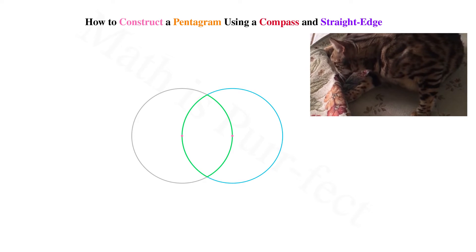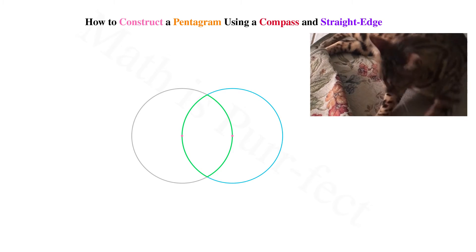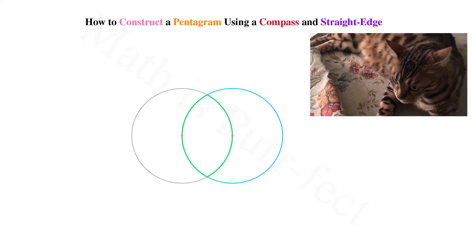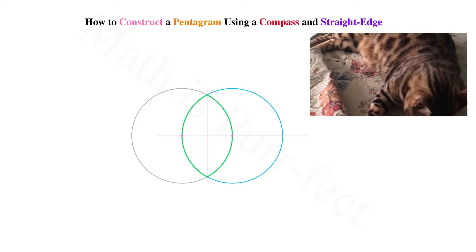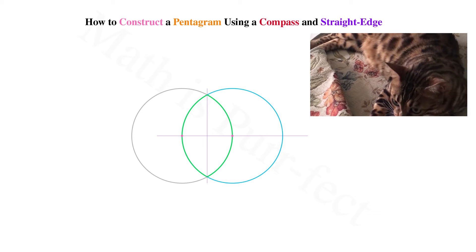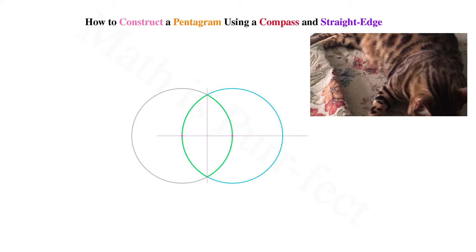The intersection of the two circles is known as the Vesica Pisces, seen here in green. Let's draw a vertical and a horizontal line through the center of the Vesica Pisces and then indicate the point where they intersect.